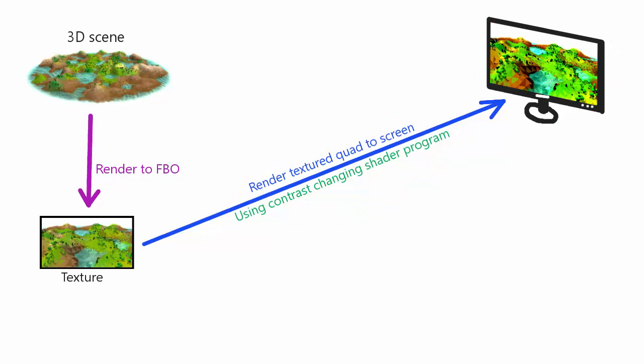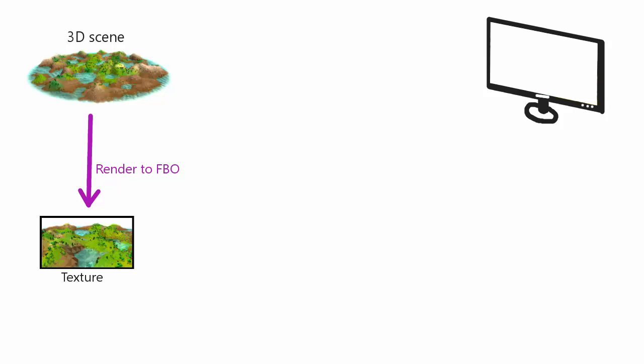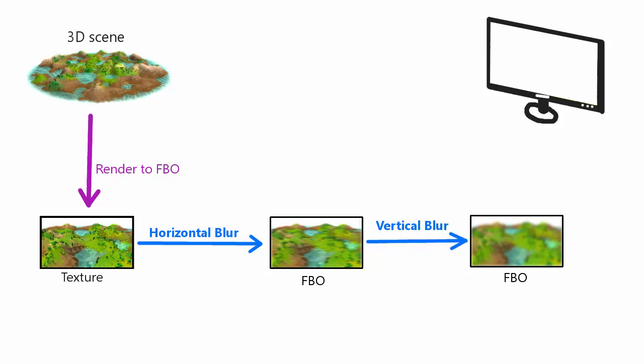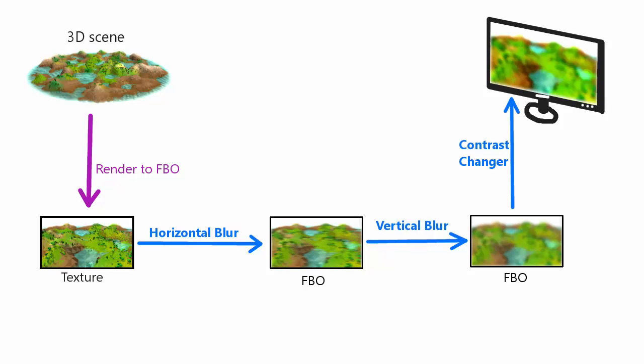This week we're going to be adding two more stages to this pipeline. First, we're going to be taking the image of the scene and passing it through a horizontal Gaussian Blur shader, which will render it not to the screen but to a quad on another FBO. We'll then take that horizontally blurred texture and pass it through a vertical Gaussian Blur stage, which will render the fully blurred output onto another FBO. That texture will then be rendered to the screen using the Contrast Changer stage.